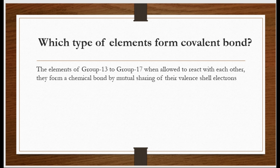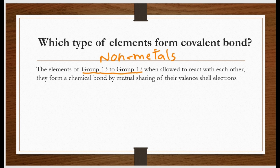Which type of elements form covalent bond? Kaun si elements covalent bond banana prefer karti hain? Yeh MCQ hai, exercise ka bhi aur board mein bhi poocha gaya hai. Aap kahenge non-metals — kaun kaun se? Group number 13, 14, 15, 16, 17. Ye non-metals jab aapas mein react karte hain to apne aakhri electrons share karte hain. As a result of this sharing, the bond formed is known as covalent bond.